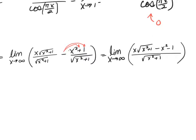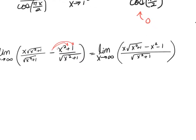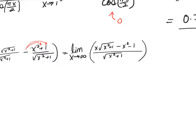Now I have this single fraction and I can check for 0 over 0 or infinity over infinity. When I put in infinity, x times the square root of x²+1 will dominate and make the numerator go to positive infinity. The denominator, as x goes to infinity, will also go to infinity. So what I have now is infinity over infinity.